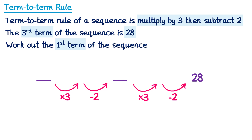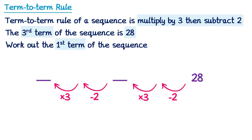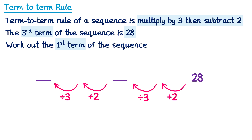But once again, we're going in the opposite direction, since we want to know the first term. So let's change the direction of these arrows, but also the operations. So both of those subtract 2s must become plus 2s, and both of the multiply 3s must become divide by 3s. Now we just work backwards to find the first term. If we start with 28, then plus 2, we get 30.